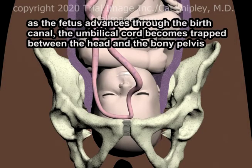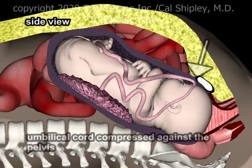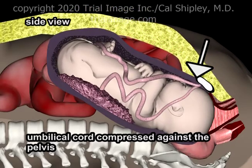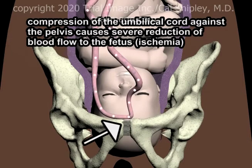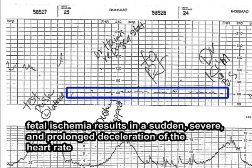As the fetus advances through the birth canal, the umbilical cord becomes trapped between the head and the bony pelvis. Compression of the umbilical cord against the pelvis results in a severe reduction in blood flow to the fetus, also known as ischemia. Compression of the umbilical cord and fetal ischemia results in a sudden, severe and prolonged deceleration of the heart rate. This makes for a dramatic change in the fetal Doppler audio.